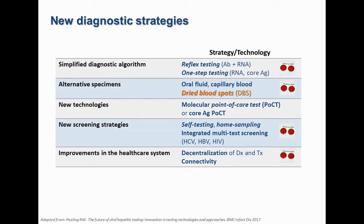Over the last few years, new diagnostic strategies have been designed to bring diagnosis closer to affected people. Dried blood spots (DBS), which are an alternative minimally invasive specimen, have proved very useful. DBS may also facilitate simplification of the diagnostic algorithm — performing reflex testing on the same sample, or even direct RNA testing in what we call one-step testing. DBS can also facilitate the introduction of new screening strategies such as home sampling or integrated multi-testing, and decentralize not only diagnosis but also treatment monitoring.